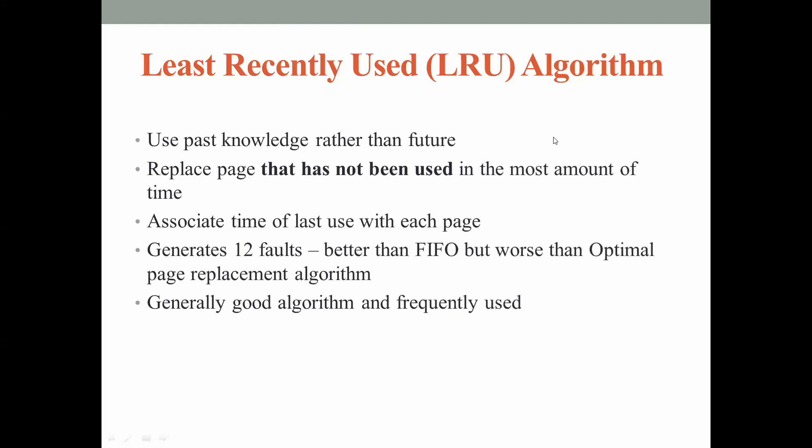In FIFO, the oldest page is selected for replacement. In Optimal page replacement, we look at future page references and replace whichever page will be referenced last. The third type is Least Recently Used page replacement. In Optimal we see future page references, but in LRU we see the past page references whenever a frame has to be selected for replacement. This strategy is very important to remember and understand.